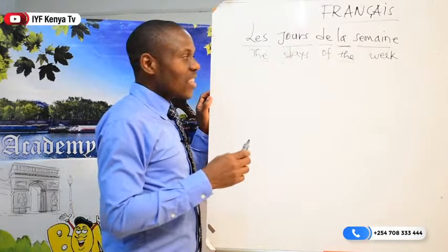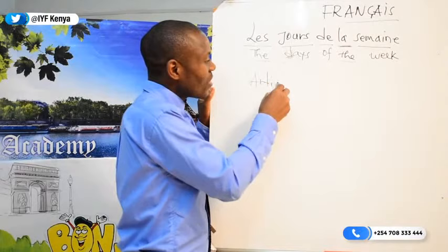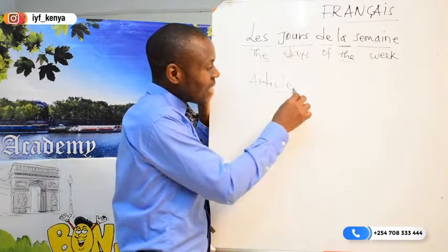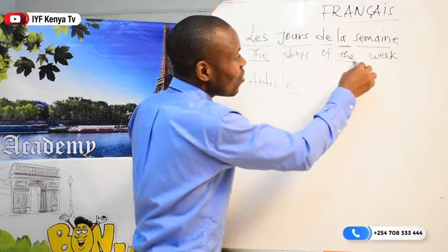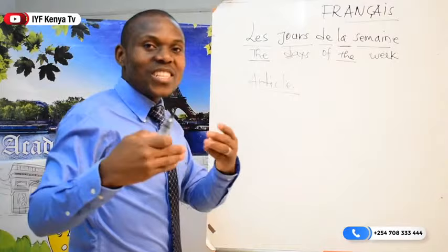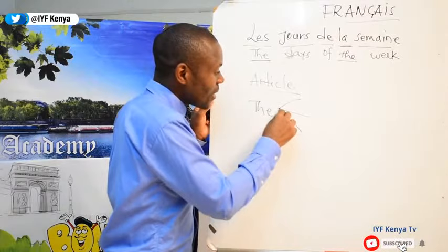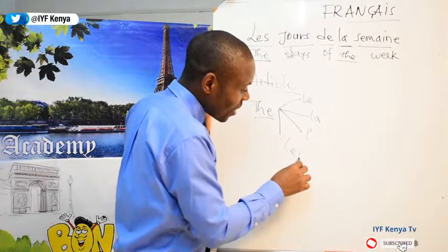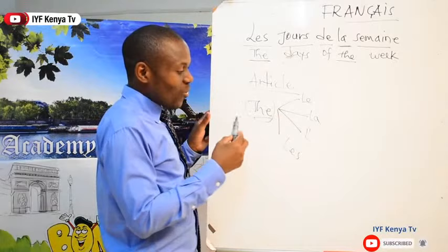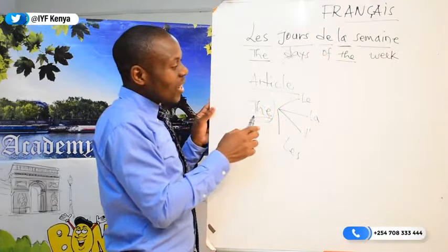There is a lesson we will see next time titled 'Article.' The definite article in French — as you can see 'le' and 'la' are both definite articles. In French, because of gender, the definite article can be 'le,' 'la,' 'l apostrophe,' or 'les' for plural. I will explain this in the next lesson. For today we are talking about 'les jours de la semaine,' so I just wanted you to note that.